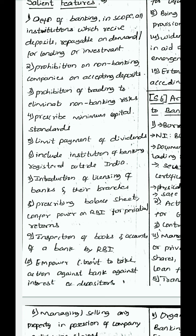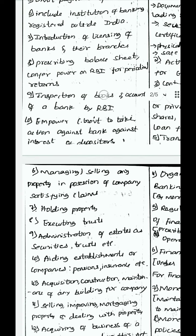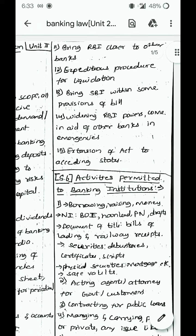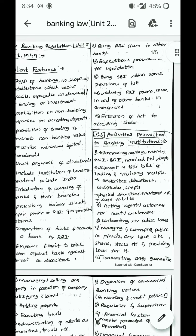Inspection of books and accounts of a bank by RBI. Empowering the central government to take action against any bank working against the interest of depositors. Bringing RBI closer to other banks. Expedition procedure for liquidation. Bringing SBI within some provisions of these bills, and widening RBI's powers to aid other banks in emergencies. Extension of the act to excelling states. These are the salient features of the Banking Regulation Act 1949.